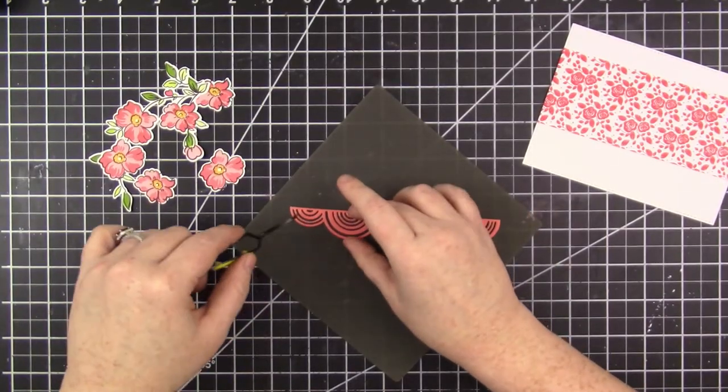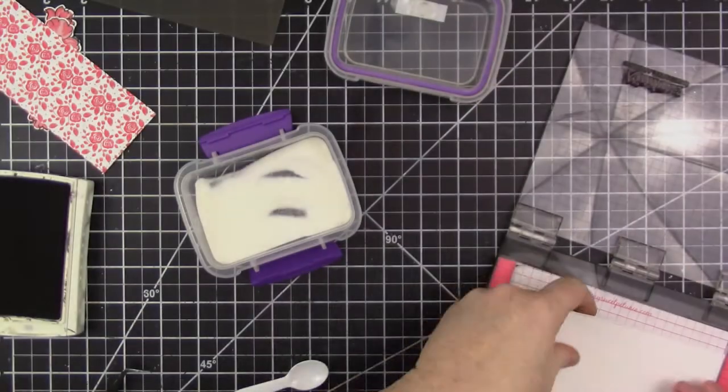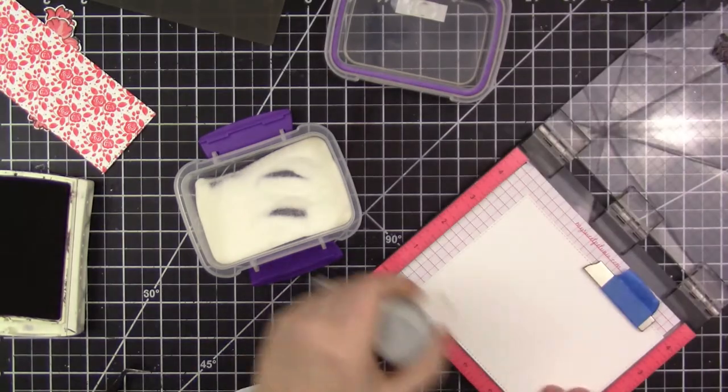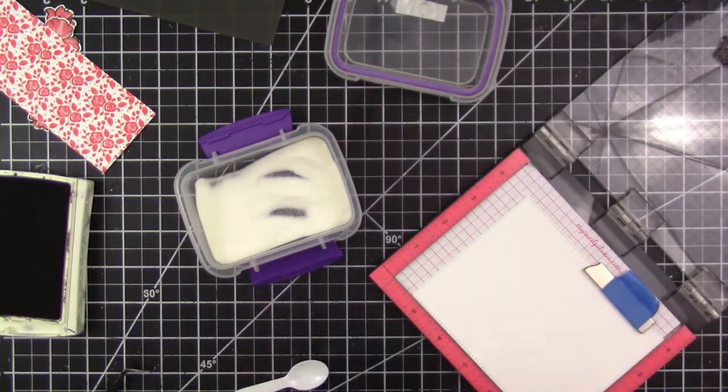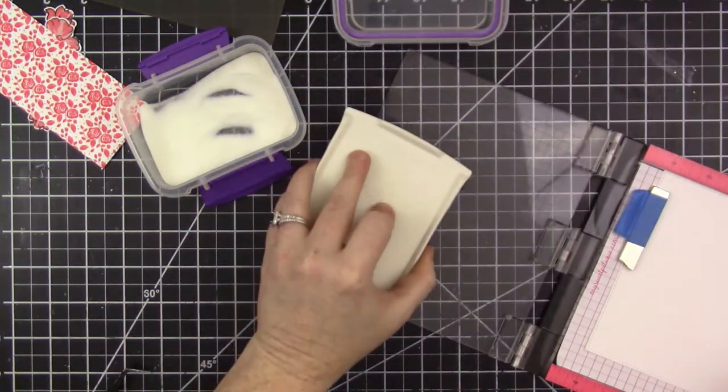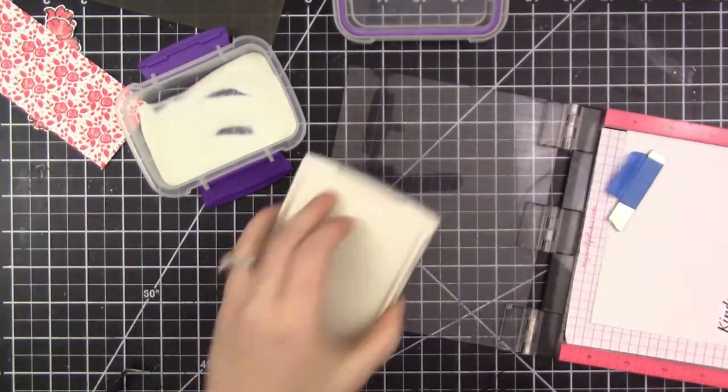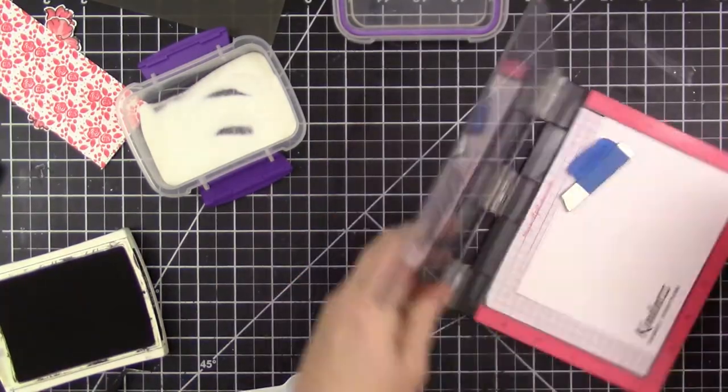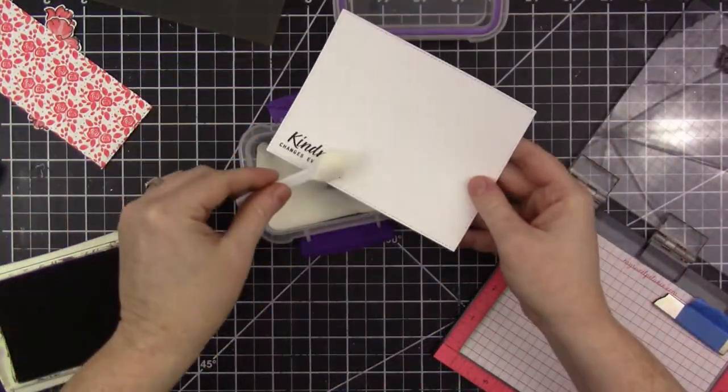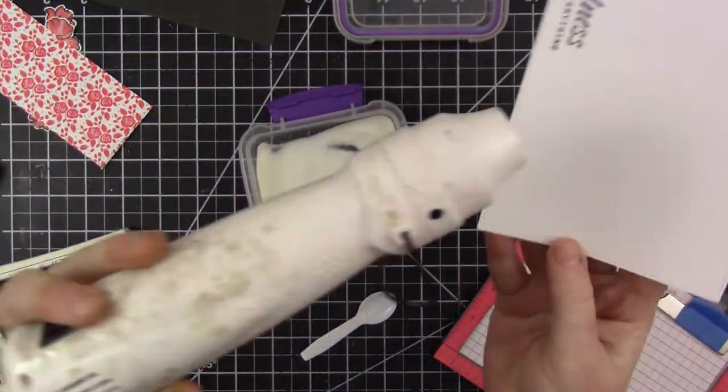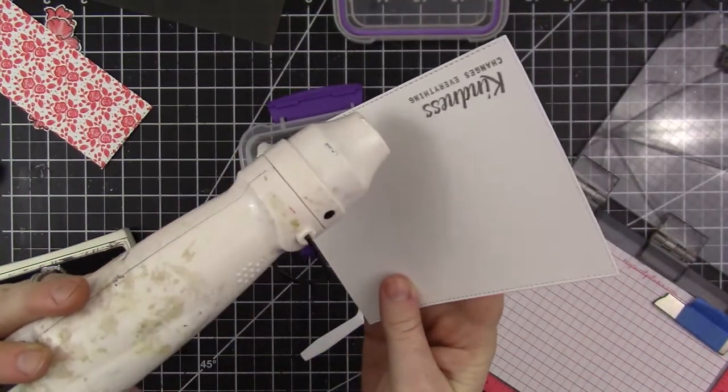Next, I'll stamp the sentiment. It reads 'Kindness is Everything.' I first stamp it in black ink and apply some clear embossing ink over the top just to give the sentiment a little bit of glossiness to it. Because I'm heat embossing, of course I prep my paper first with the anti-static powder tool.